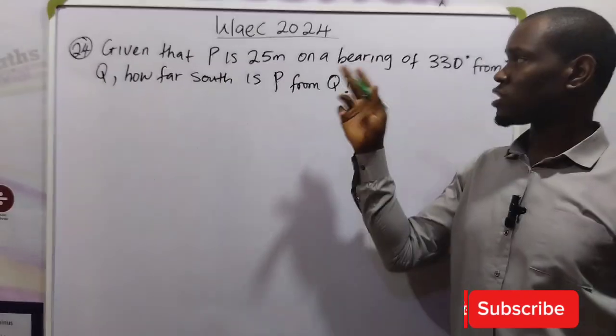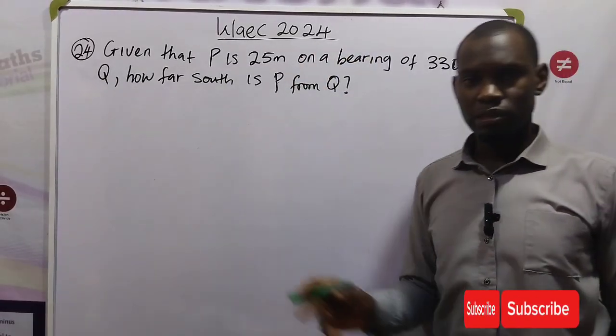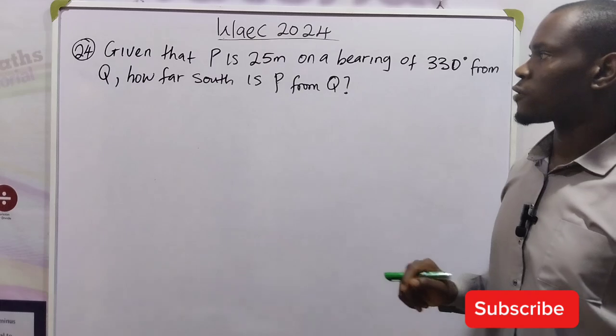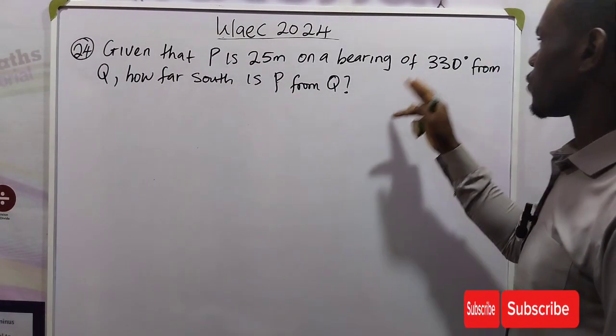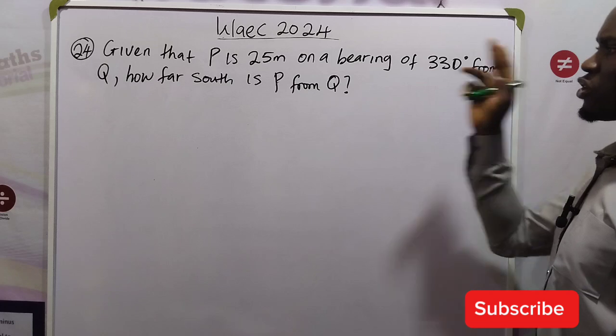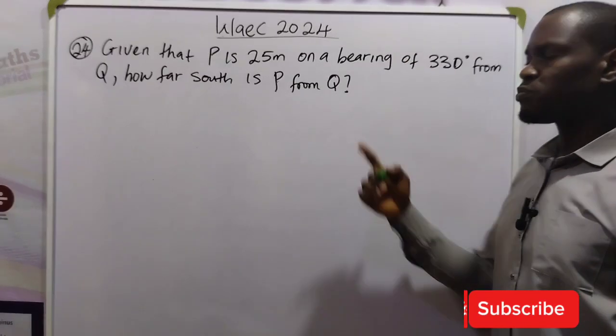We have question 24 of the 2024 WAEC Mathematics past question. Let's solve it together. Given that P is 25 meters on a bearing of 330 degrees from Q, how far south is P from Q?